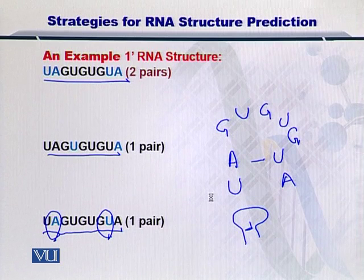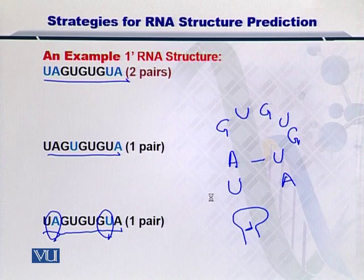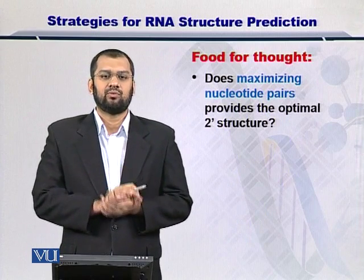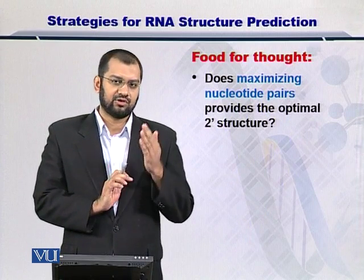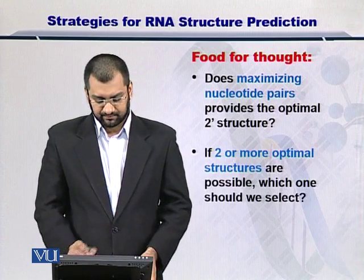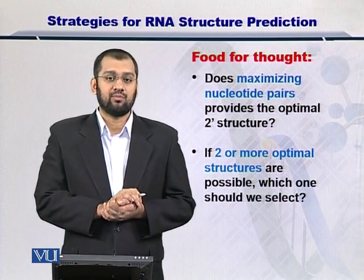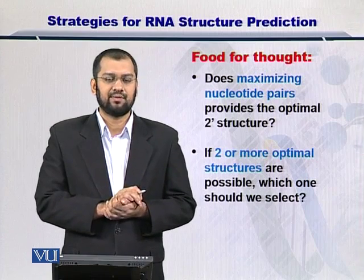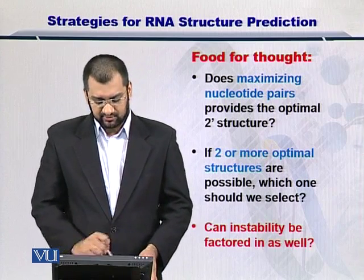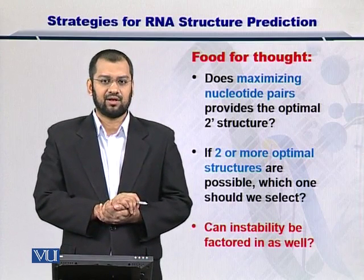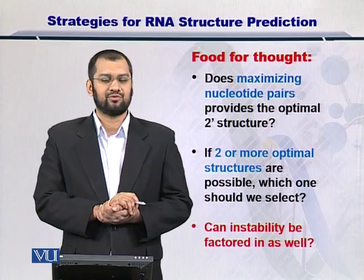So out of these three possible 2' structures, which one will you choose is a very interesting question. We are left with two options: one, either to maximize the nucleotide coupling, or if we have more than two possible structures with an equal number of nucleotides coupled, how do we select? Should we look at the instability of the RNA molecule? That is a question for you to think about.